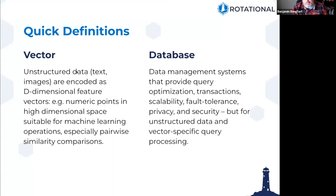When it comes to vector databases, these are oriented specifically to unstructured data and vector-specific query processing. Machine learning and AI operate on numeric representations of data — that's what a vector is. More specifically for vector databases, we're thinking about the encoding of unstructured data — text and images in particular — as D-dimensional feature points in a high-dimensional space. That allows us to perform a number of queries, especially pairwise similarity comparisons.